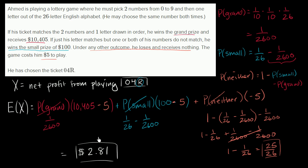This is actually a very unusual lottery game where you have a positive expected net profit as a player. Usually the person operating the lottery — the state, or the casino, whoever it is — has the expected net profit, and the player has the expected net loss. But this game would actually make rational sense to play, with an expected $2.81 net profit.